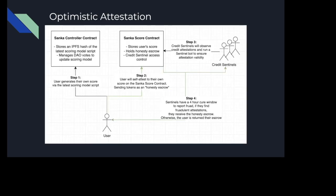We use an optimistic attestation model for this. As we know, computing all these values on-chain would be incredibly expensive. So we use a model similar to optimistic bridging, which basically allows users to self-attest to their own credit score. Here we'd have two smart contracts that run on-chain. The first would be the Sanka controller contract, which would store an IPFS hash of the latest scoring model script. That would be determined by DAO votes, providing a fair way to have the community drive updates to scoring given a certain protocol like Aave or Maker.